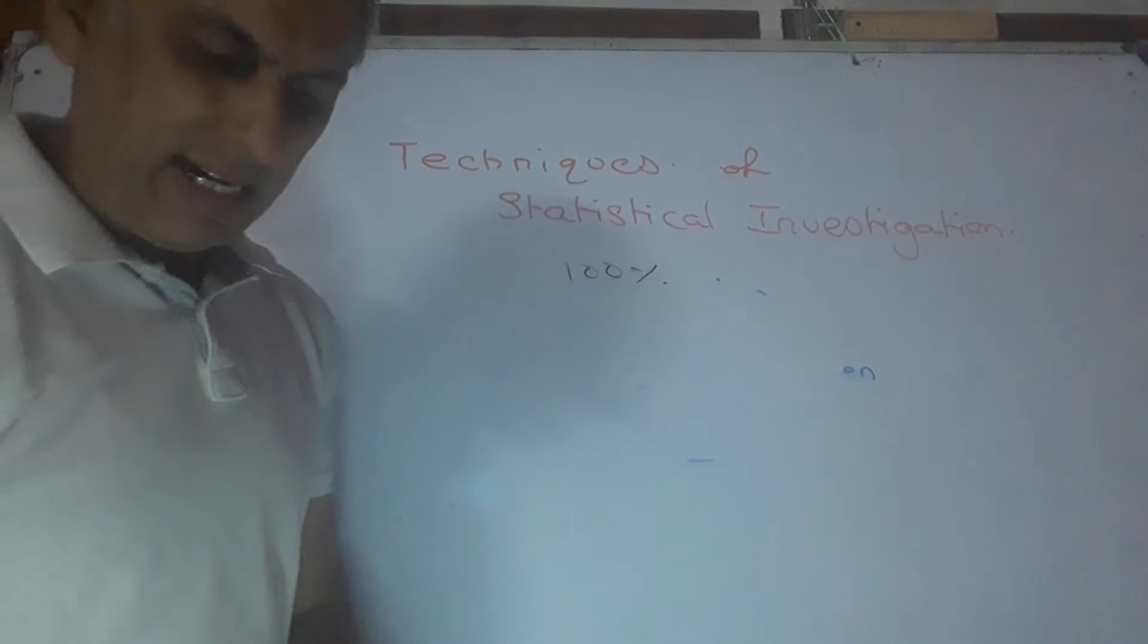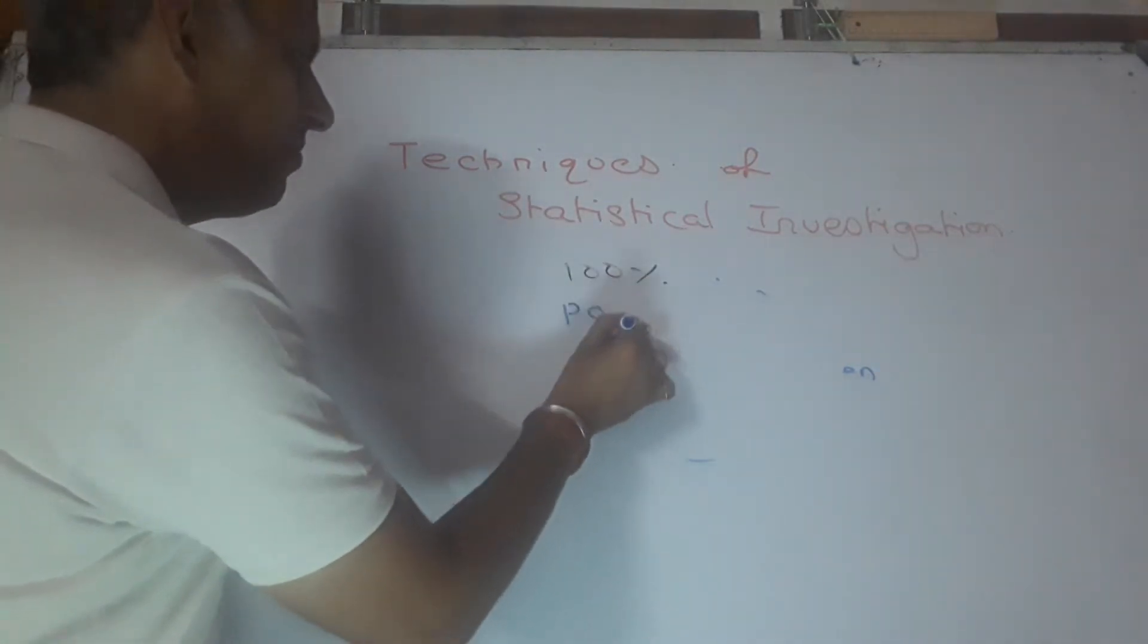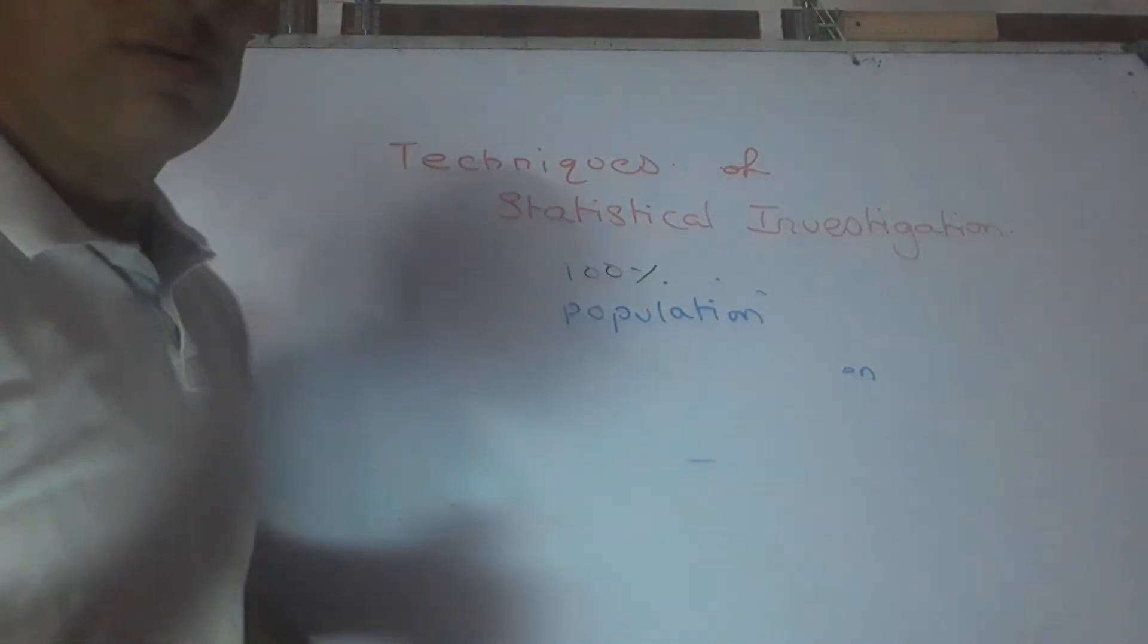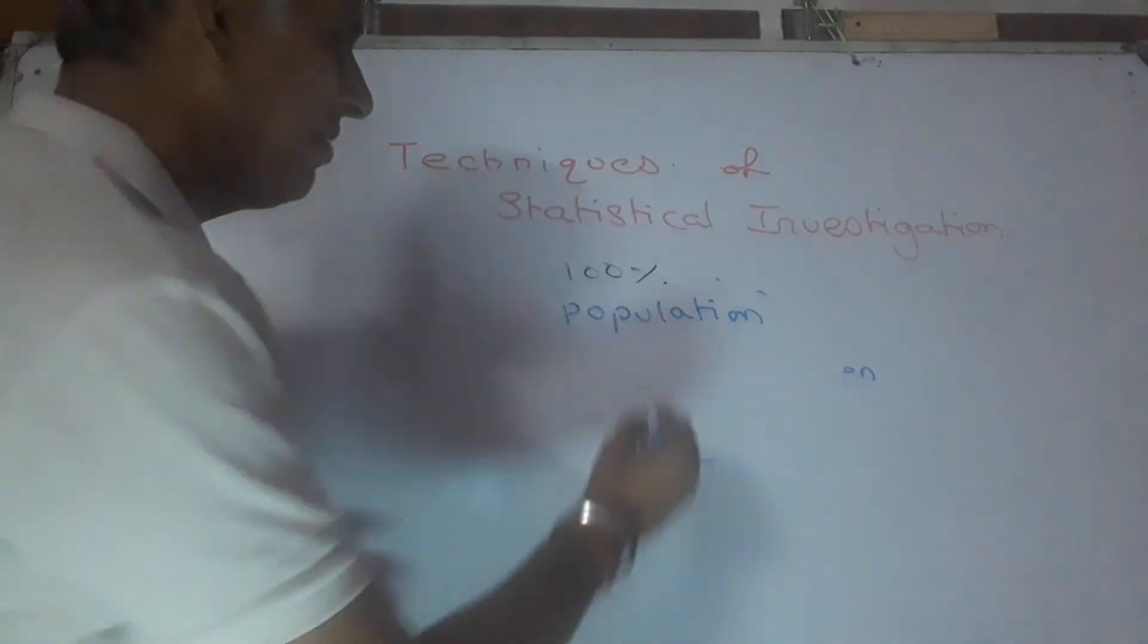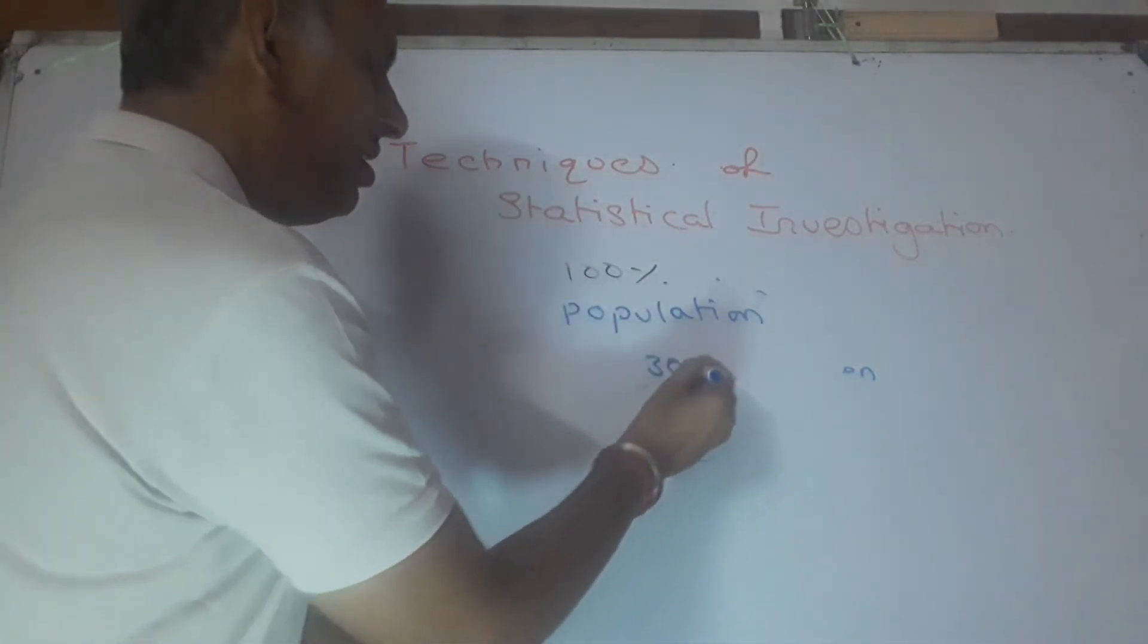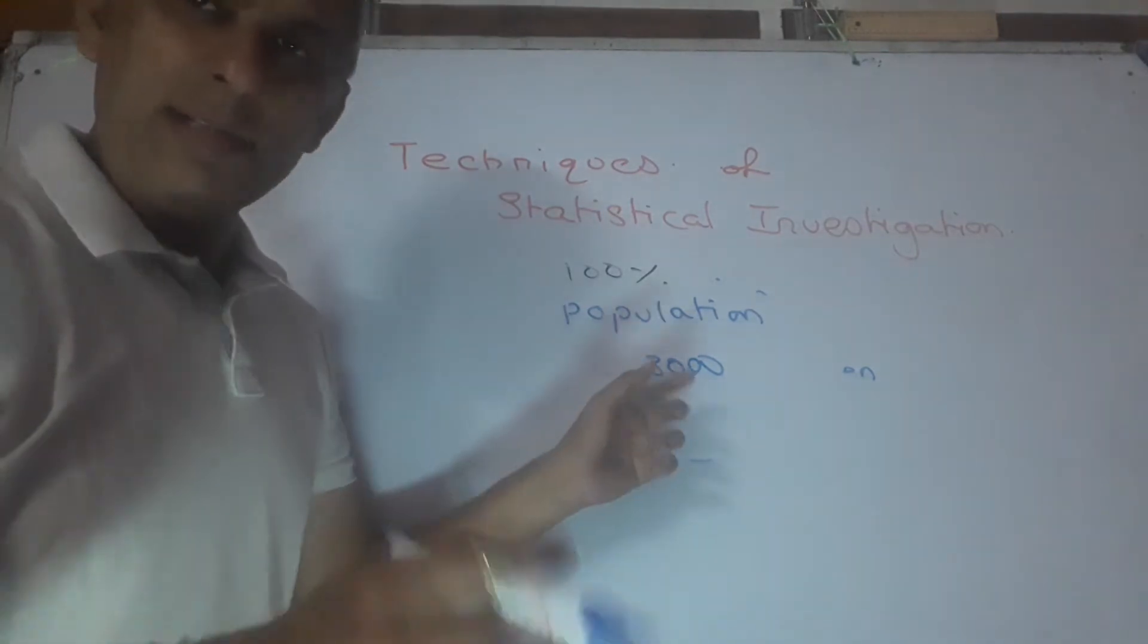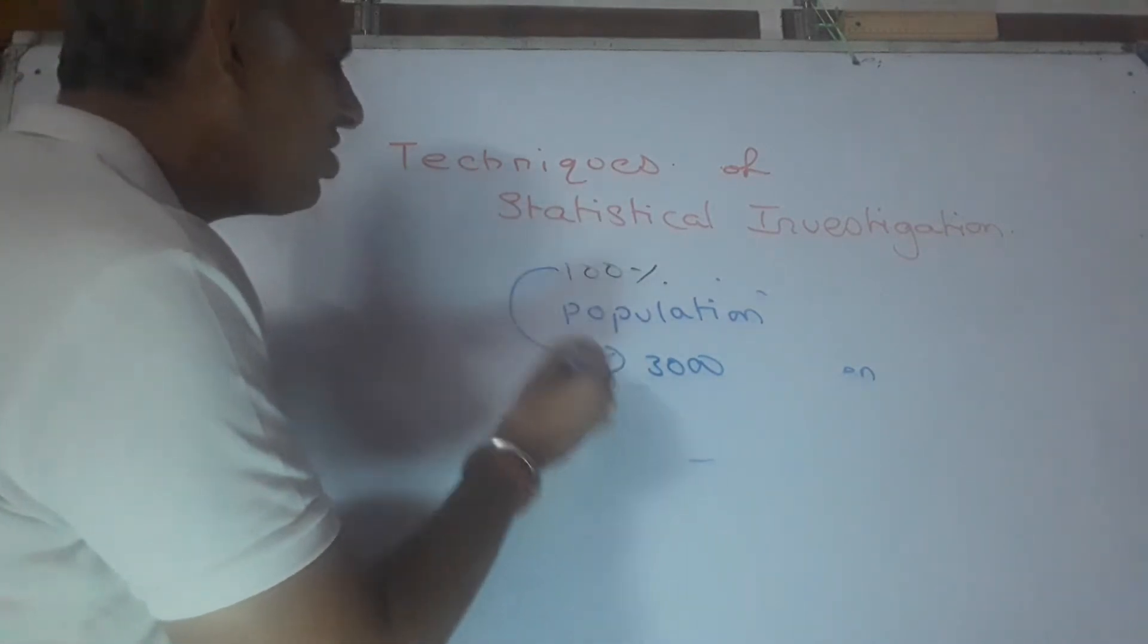All of you are aware of the term population. Population here refers to the number of elements in a study. So if, say for example, 3000 children are to be studied for a purpose, then all 3000 will be referred as population.